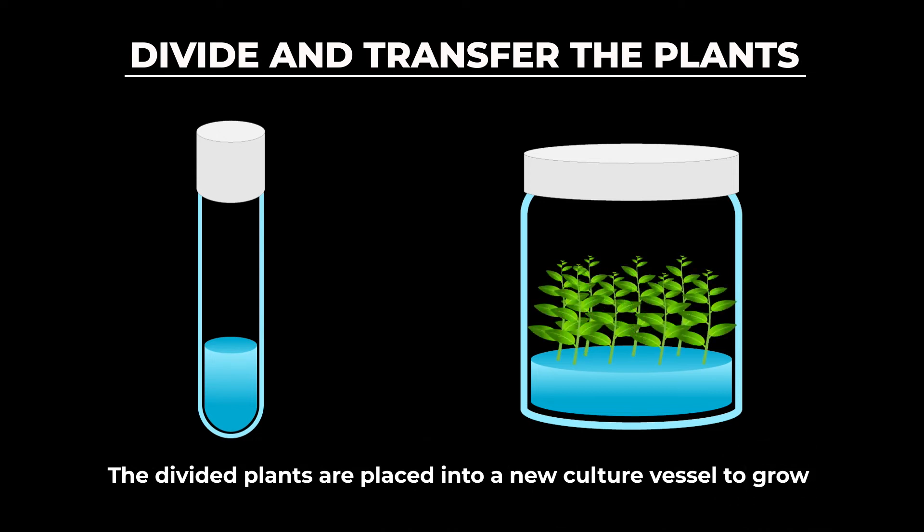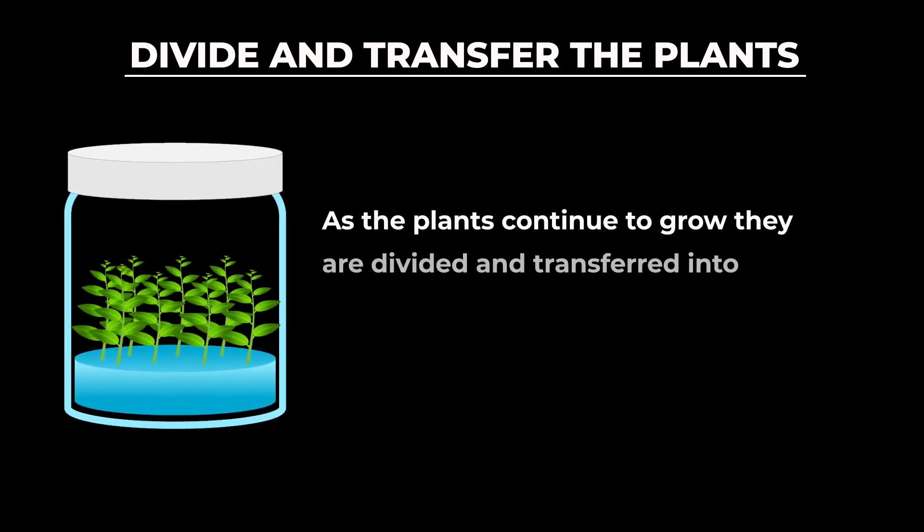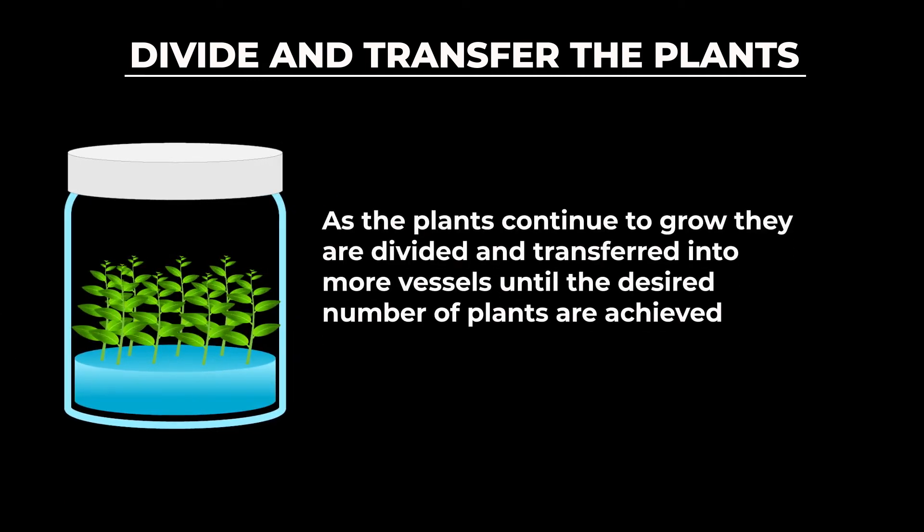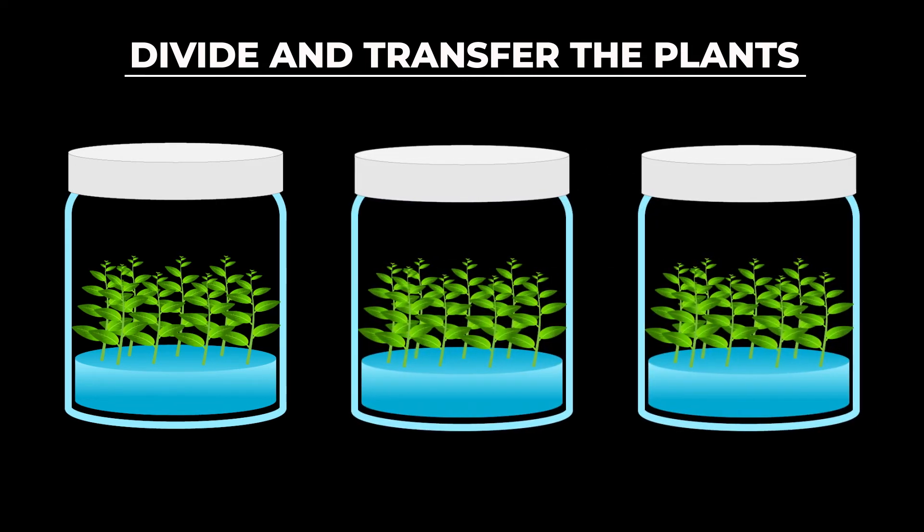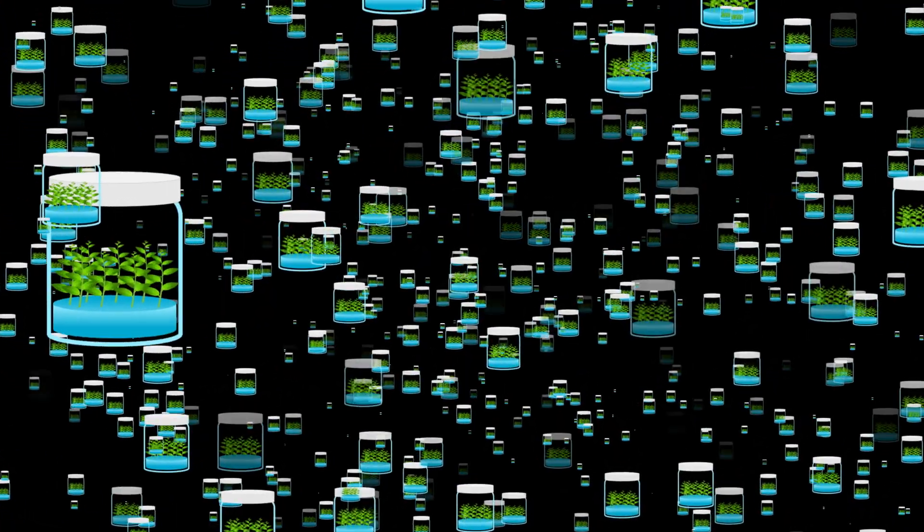They can then be further divided into more culture vessels until the desired numbers are achieved. The plants can multiply at an exponential rate during this phase and produce a large number of plants in a relatively short period of time.